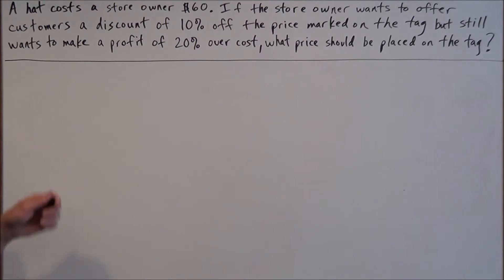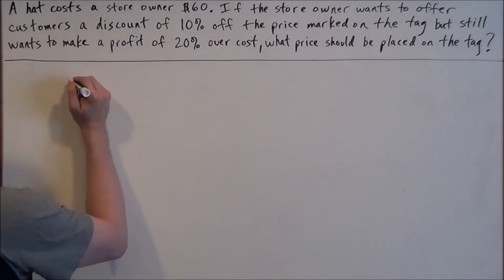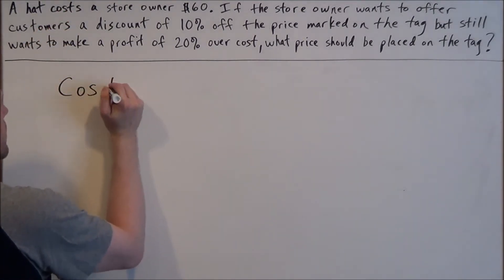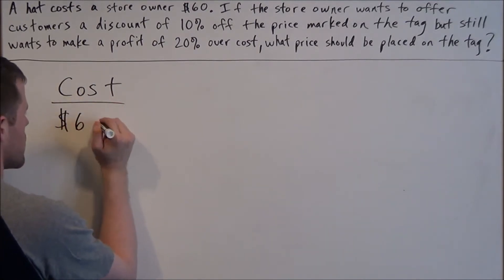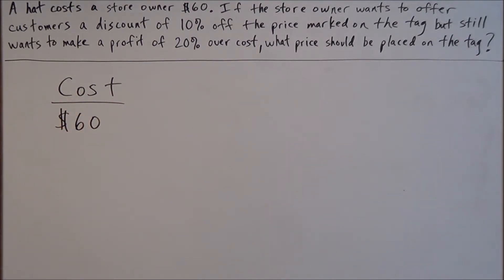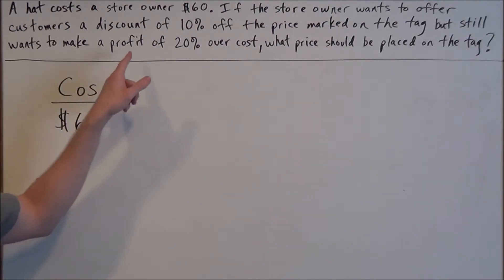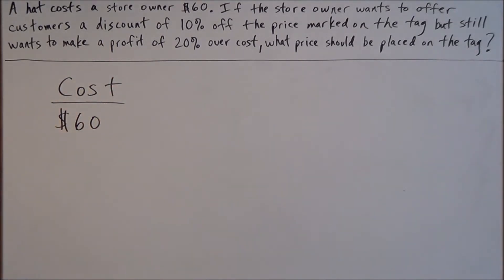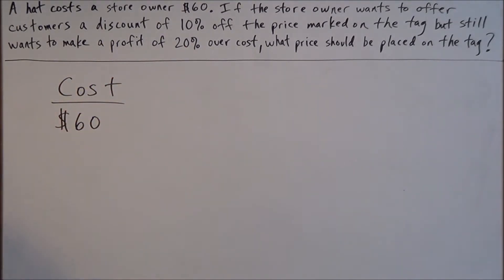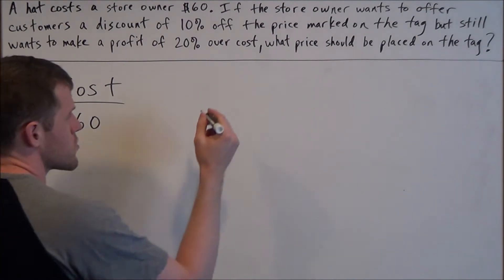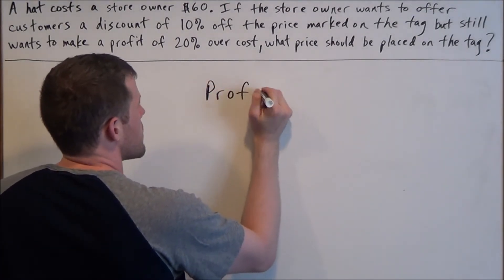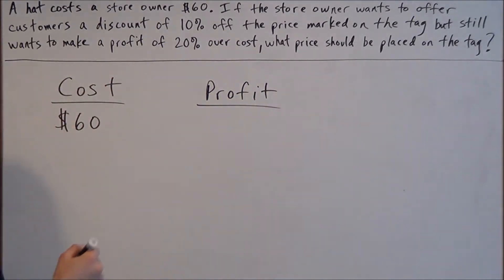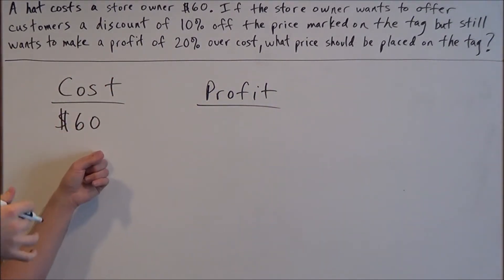We can start off with the cost of the hat. The store owner is paying $60 for this hat, but his goal is to make a profit of 20% over cost. So this is the percent we need to target first. If he wants to make a profit of 20%, that means if he paid $60, he wants to make 20% more than this.